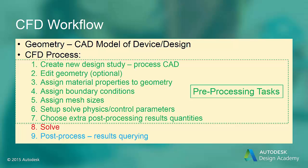There are tools available to refine this mesh in specific areas. Before we can solve the CFD problem, we have to determine the type of physics present and choose extra results to post-process. Now we are ready to solve and do the actual number crunching. We have now discretized the geometry and set up the discretization of the equations. After the CFD solution finishes, we can query and examine the results to learn about the behavior of the design and to suggest new design changes.